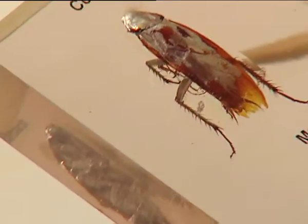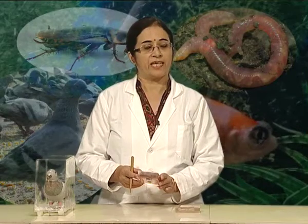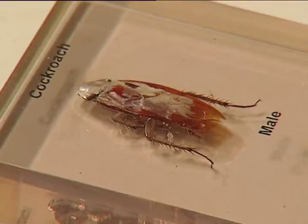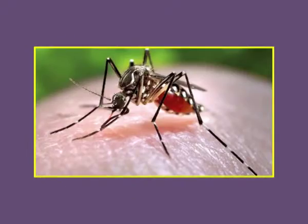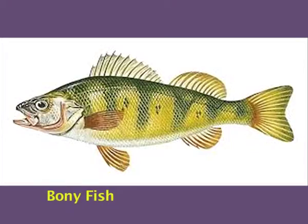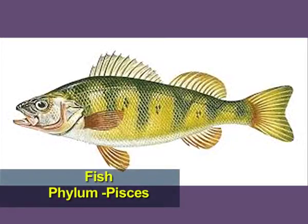The circulatory system of cockroach is open. Sexes are separate. It is oviparous, meaning egg-laying. It is a nocturnal animal, active during the night. Other examples of phylum Arthropoda and class Insecta include honeybee and mosquito.